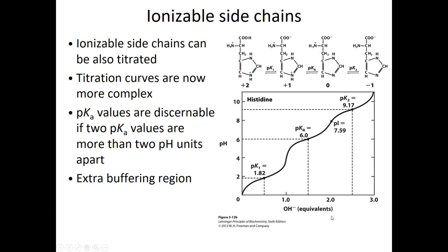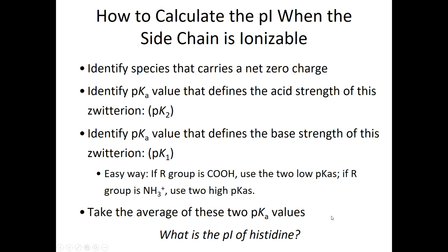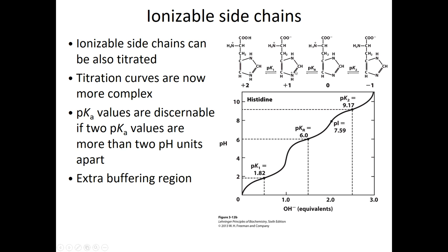How do you calculate the pI when you have an ionizable R group? You need to identify the pKa that defines the acid strength and the pKa that defines the base strength, and take the average of the two. The simpler way: if your R group is a carboxylic acid, use the two low pKas. If your R group has an amine, use the two high pKas to calculate your pI. So for histidine, since the R group has an amine, you use the two higher pKas, giving a pI of around 7.59.